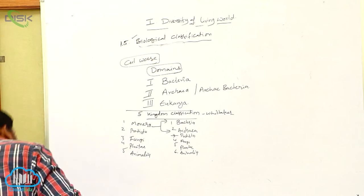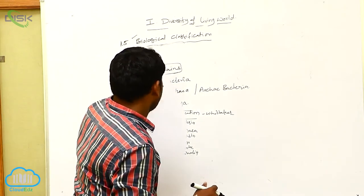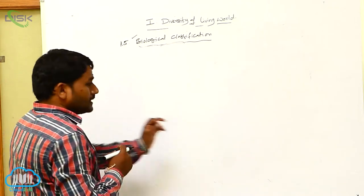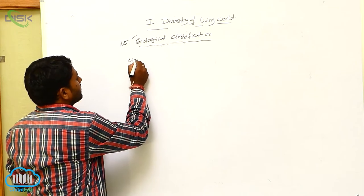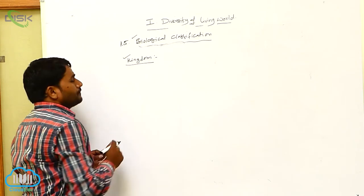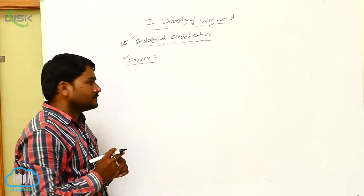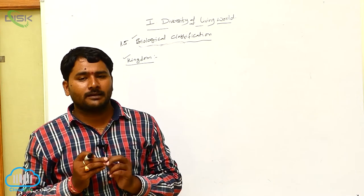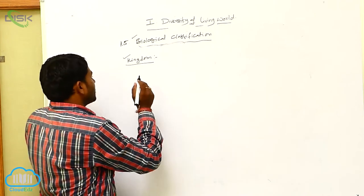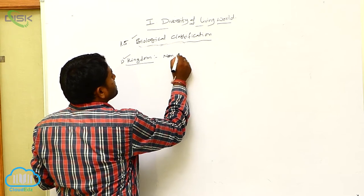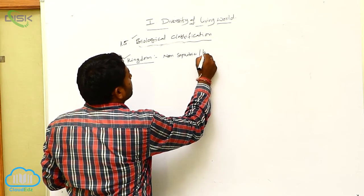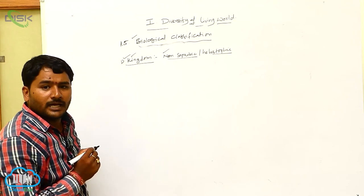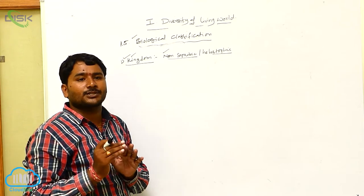This is about biological classification. Let us look at each level one after one. First, let us take Kingdom. For example, if you take Kingdom Animalia — it is a group of non-saprobic, heterotrophic animals. When you leave domain aside, Kingdom is the biggest taxonomic unit.